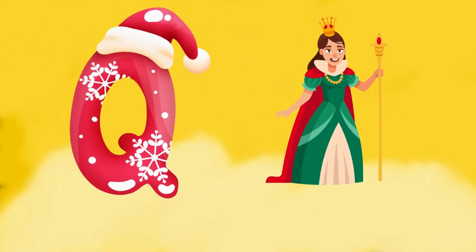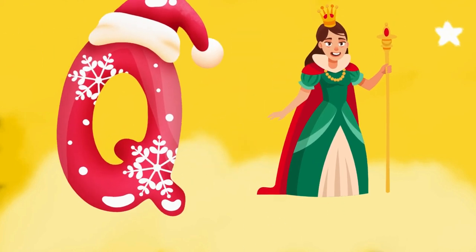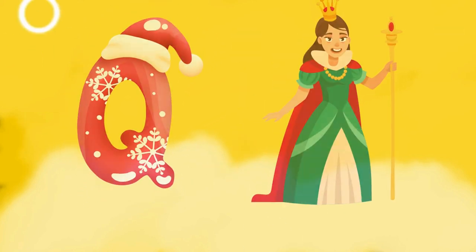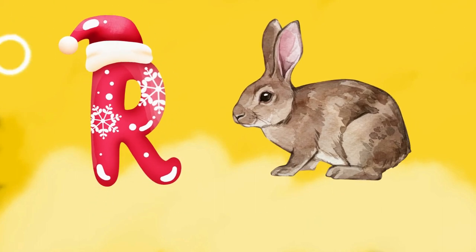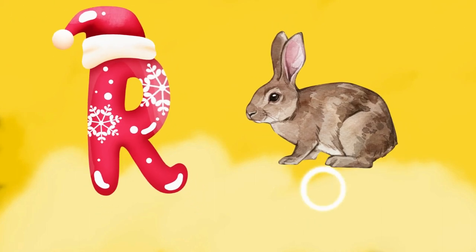Q is for queen, k-k-queen. R is for rabbit, r-r-rabbit.